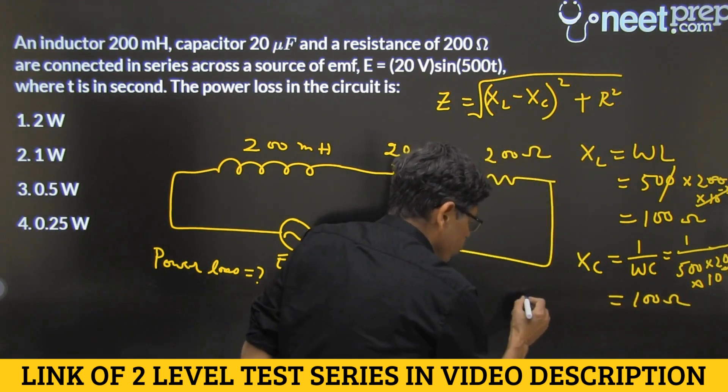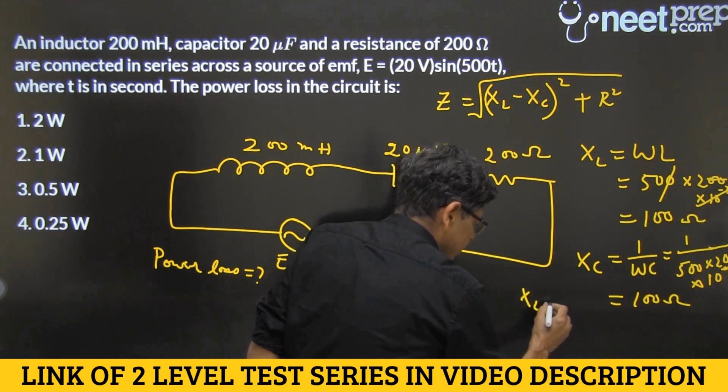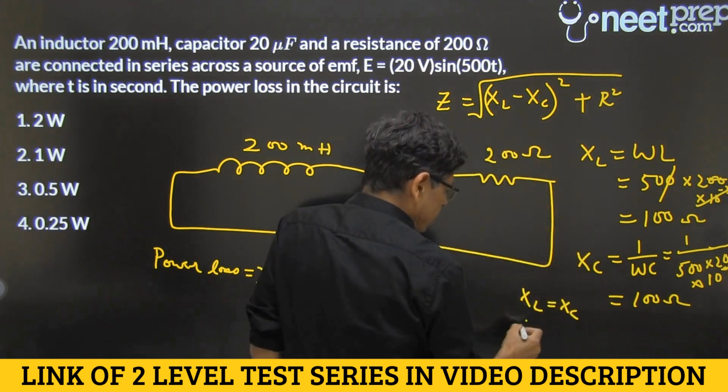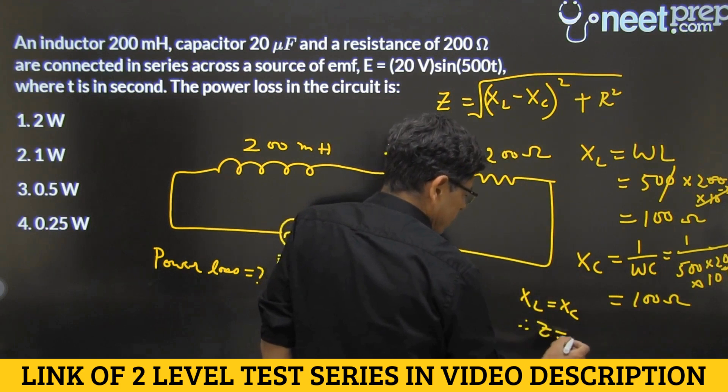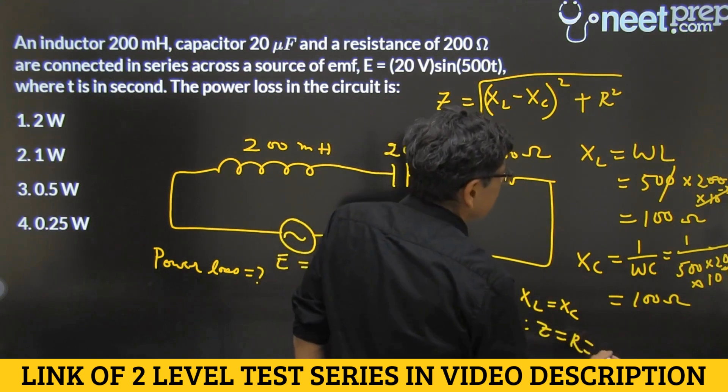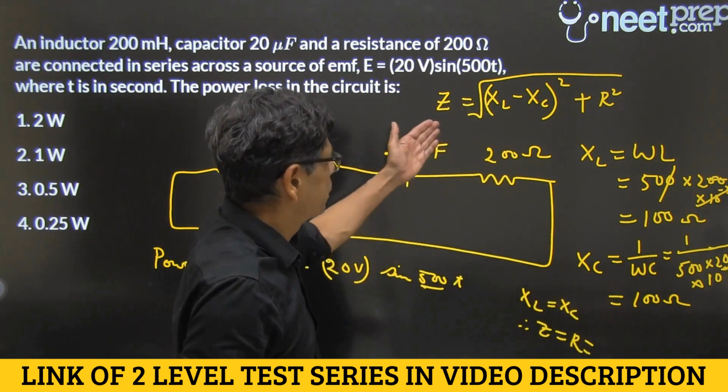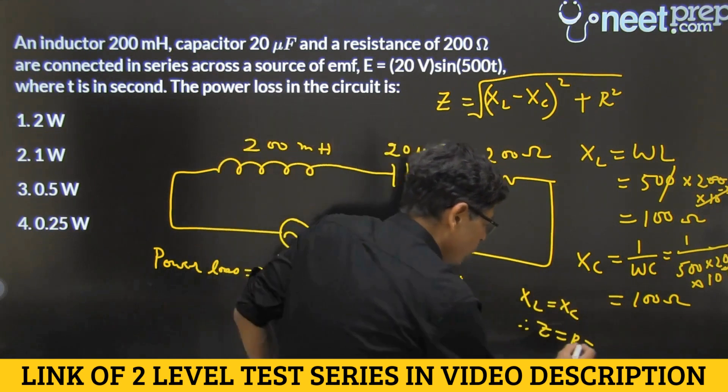so this is also 100 ohms, oh, that's great, good news, because XL is equal to XC, which means Z is equal to R, and Z is nothing but, so it is a circuit in resonance, and Z therefore is equal to R is 200 ohms.